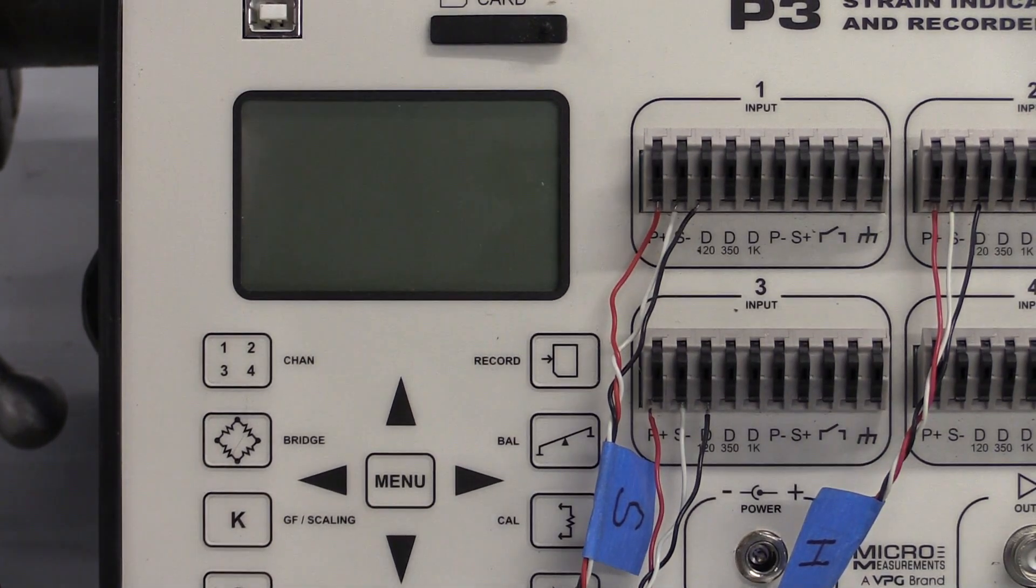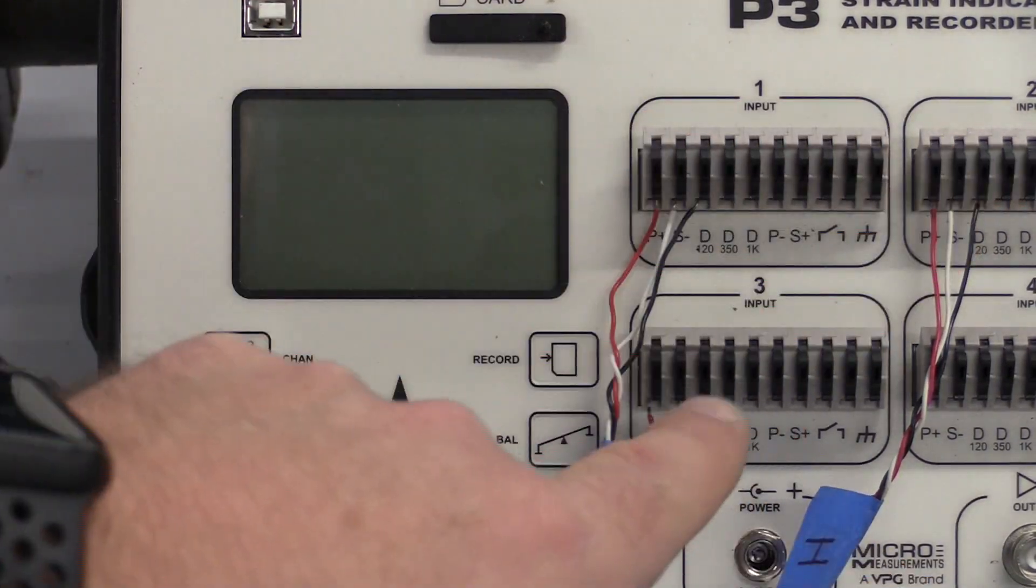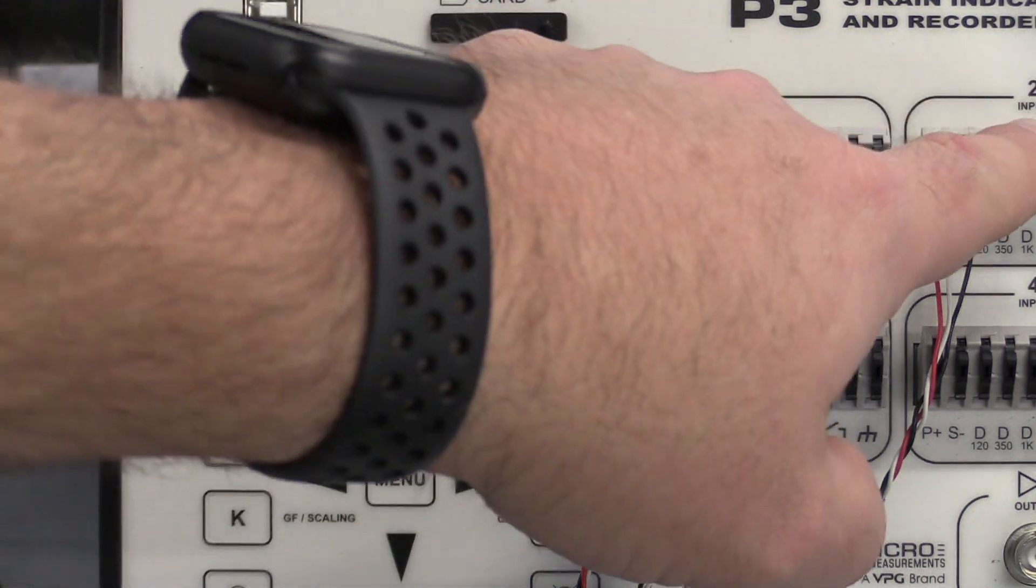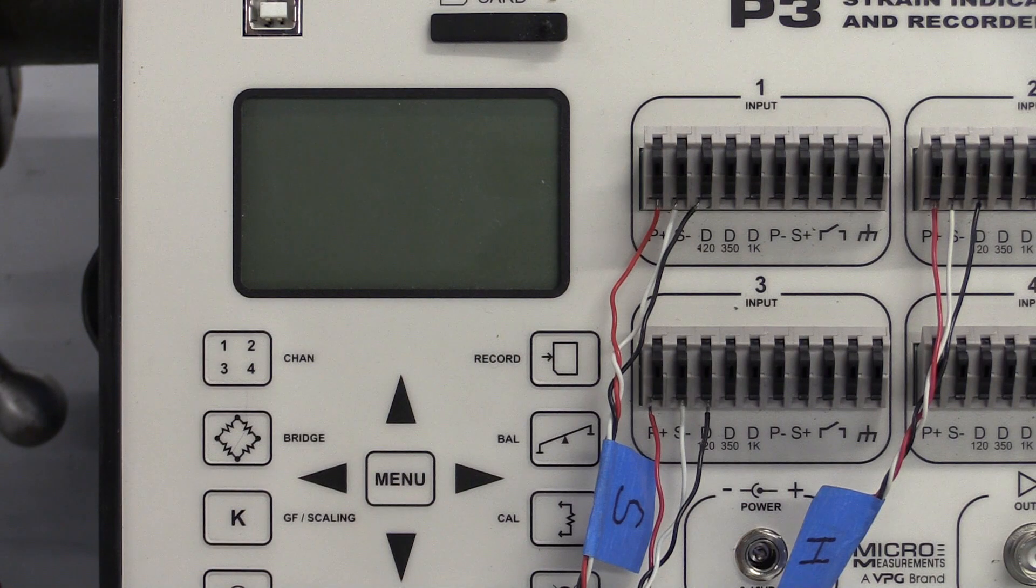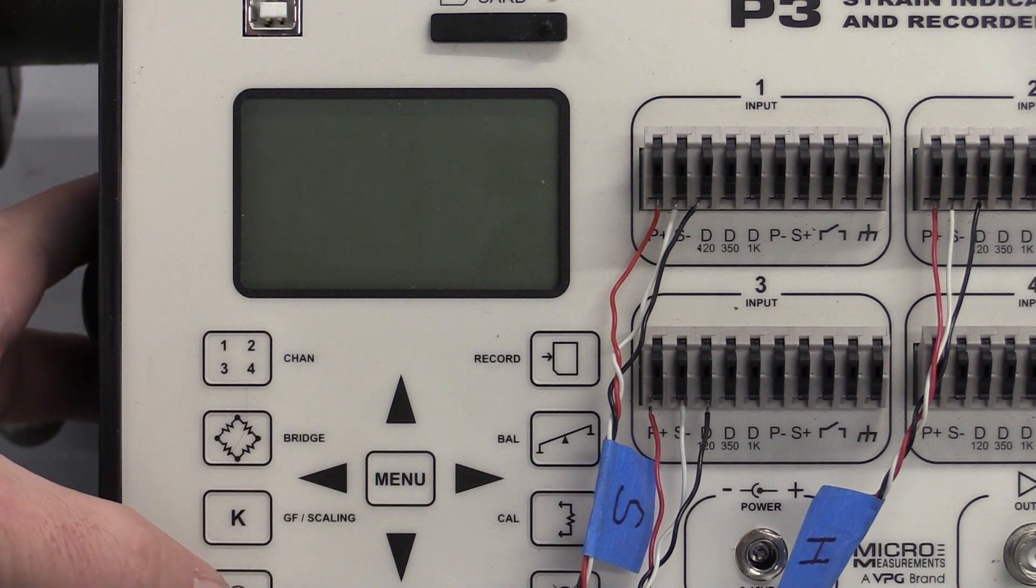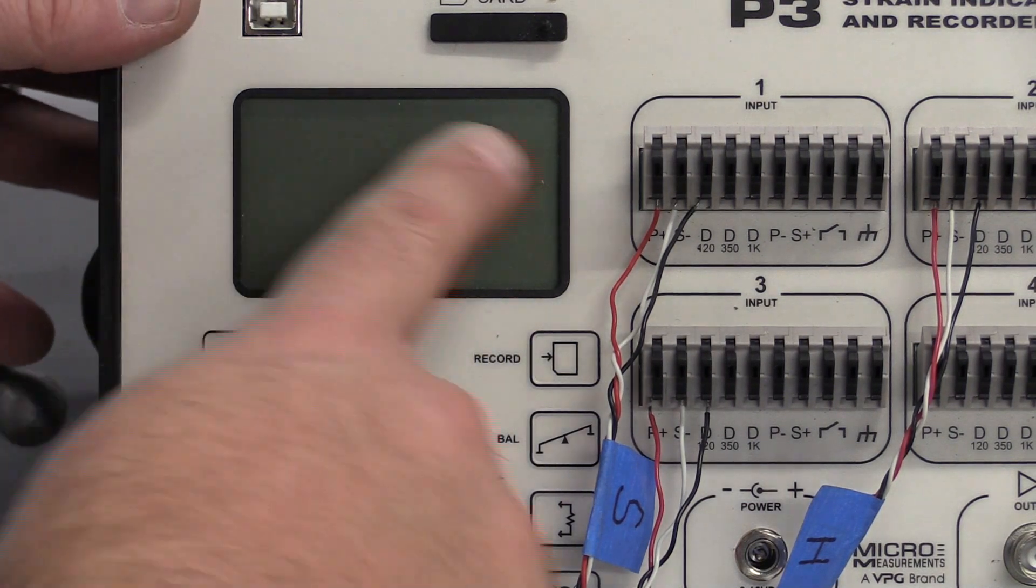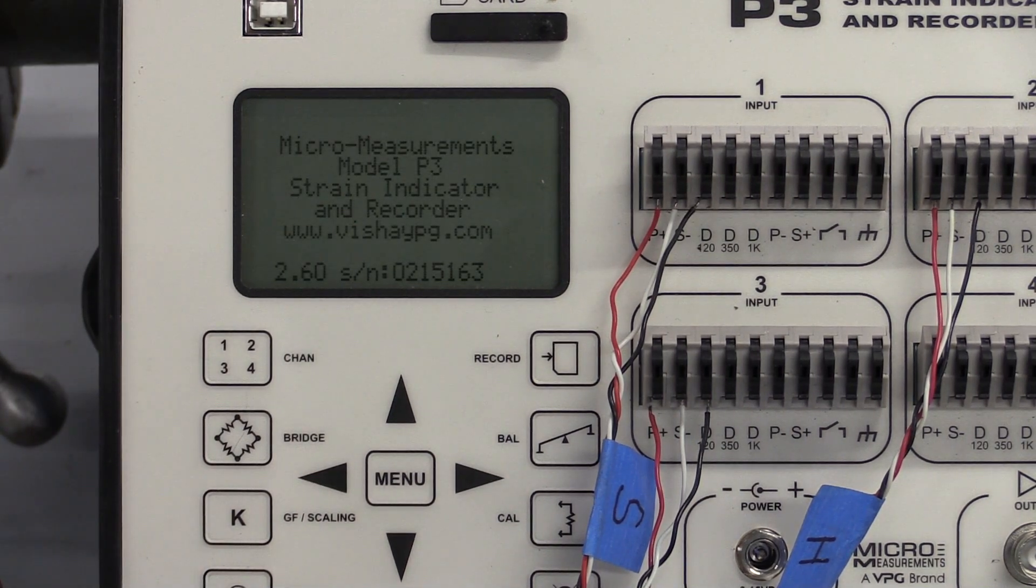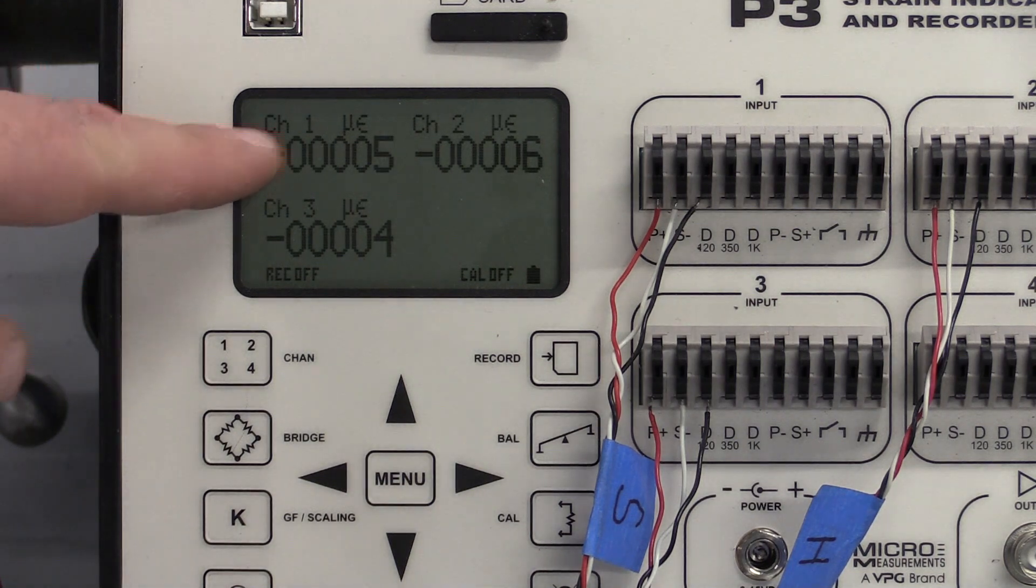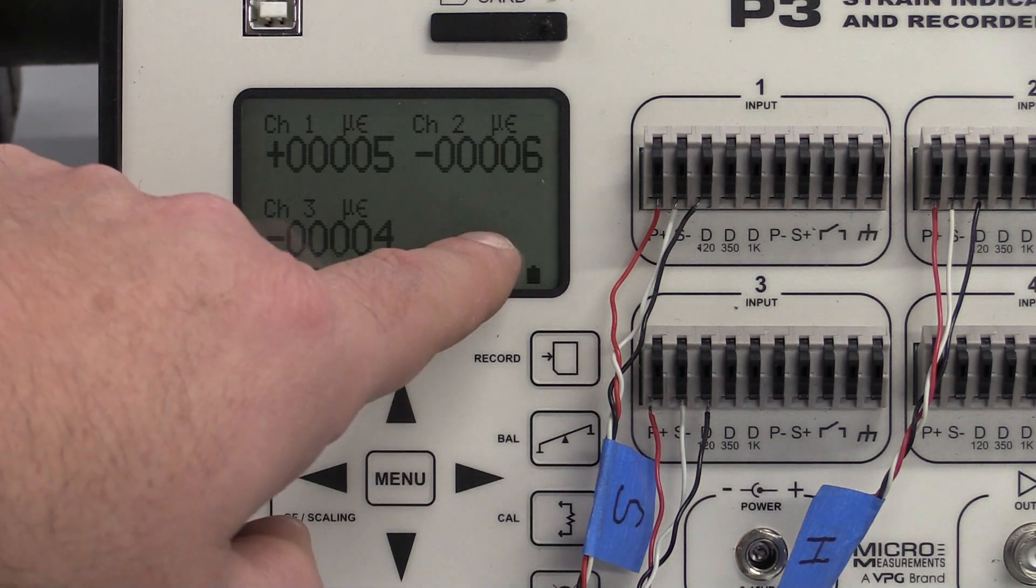Okay, what we're gonna do now is talk about how to use this. I've hooked up all three channels. Channel one is gonna be solid, channel two is gonna be the hollow section, and channel three is gonna be my open section. Now what I've done is prop this up where I can get the screen to show up here and we're gonna turn this unit on by hitting power. It's booting up and it's showing that we have three channels on.